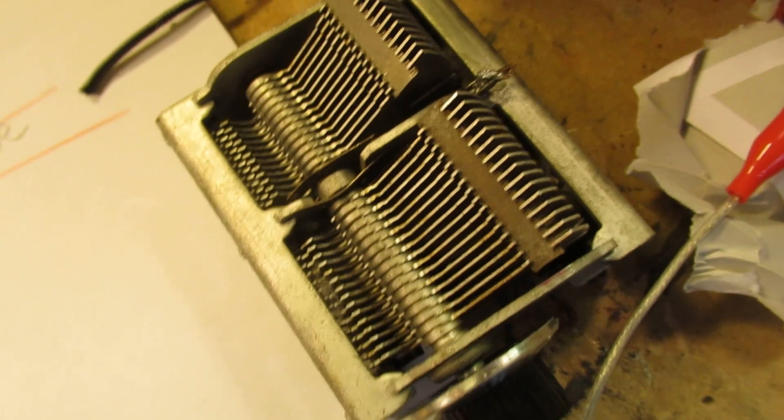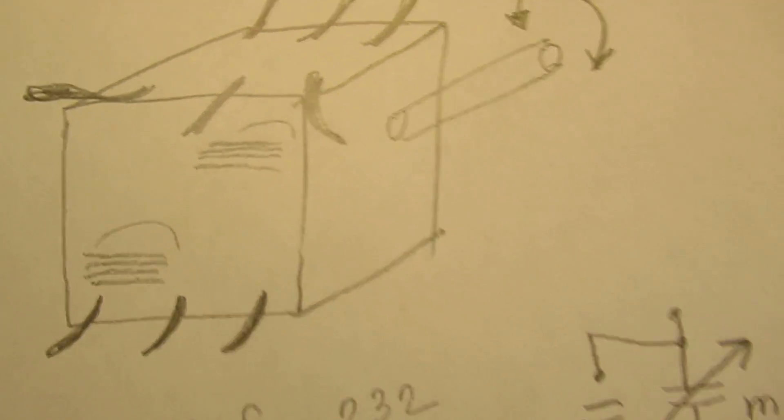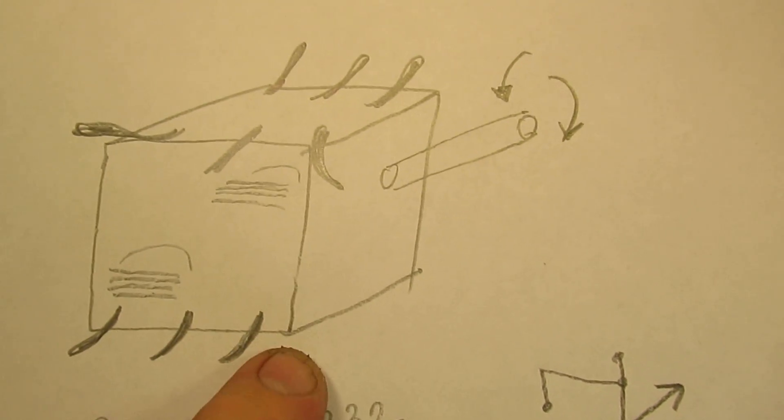And this is the capacitors that we can buy still nowadays. These capacitors are at the moment, at least in the Netherlands, very expensive. But this is the typical tuning cap of such a radio.